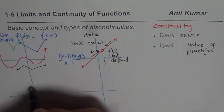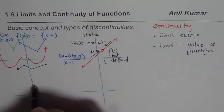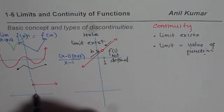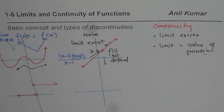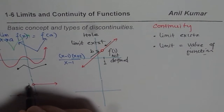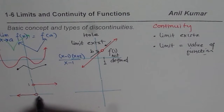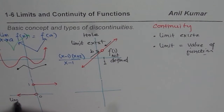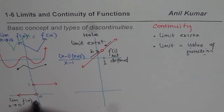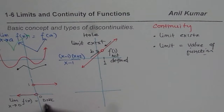Now let's consider a jump discontinuity. Take a simple function that equals 1 for all values greater than 0 and equals 0 for all values less than 0. In this case, the limit of the function as x approaches 0 does not exist. If the limit does not exist, the function is discontinuous.